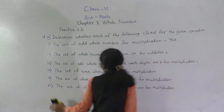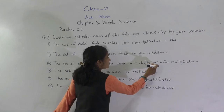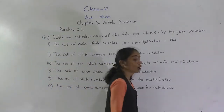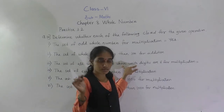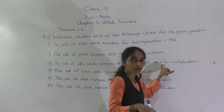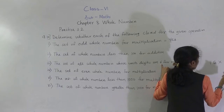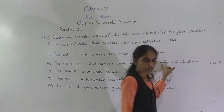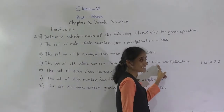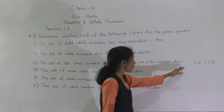Then next: the set of all whole numbers whose units digit is 6, for multiplication. Suppose if I take 16 — it is a whole number whose units digit is 6. And one more number: 26, which also has units digit 6. So 16 into 26. Both are whole numbers with units digit 6. There are 4 multiplications to do.